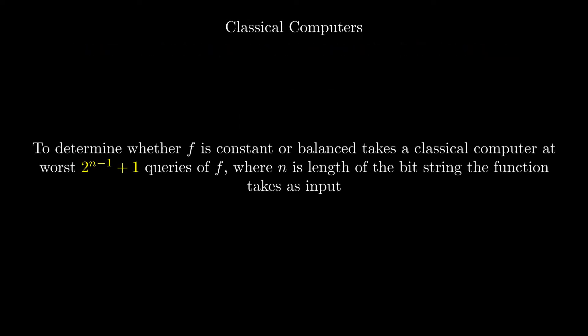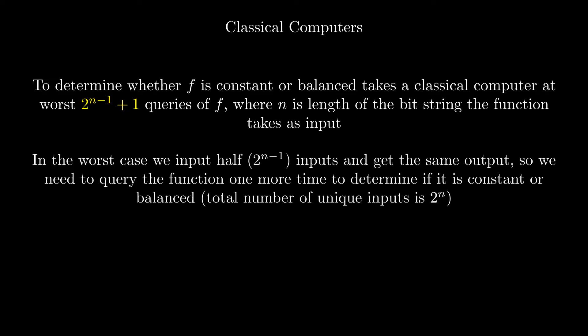For a classical computer to solve this problem, it would need to query the function in the worst case 2^(n-1) + 1 times, where n is the length of the bit string the function takes as input. This is because in the worst case, we check half of the inputs and get the same output for all of them, then we need to check one more input to determine whether the function is constant or balanced. There are 2^n possible bit strings of length n, so 2^(n-1) is half of the possible inputs. Therefore, we need to check 2^(n-1) + 1 inputs in the worst case to be certain.